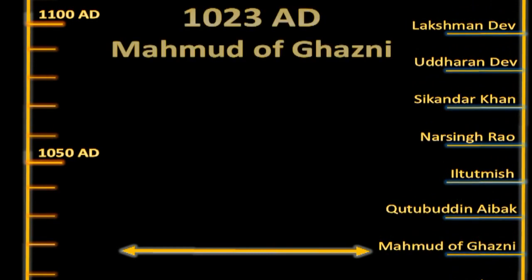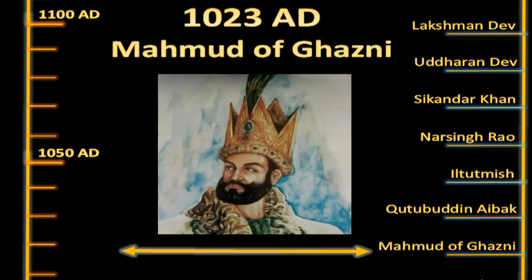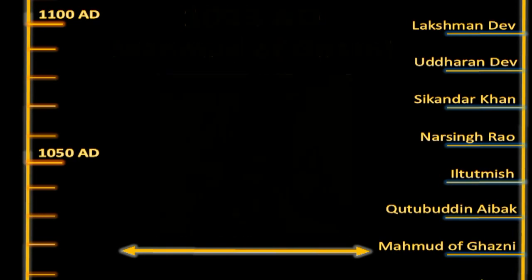These rulers had 'Dev' in their names. In a way they seemed to say they were Dev, meaning in the developmental phase — and so they were quickly attacked by Mahmud of Ghazni.